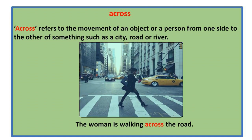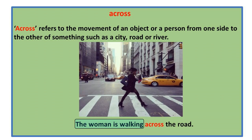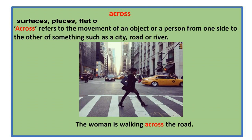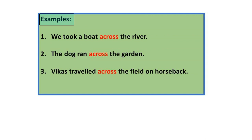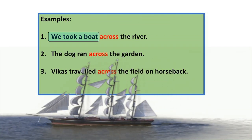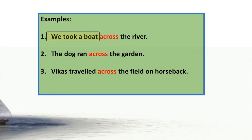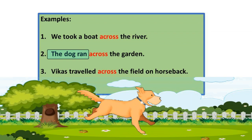Now look at the picture — in this, the woman is walking across the road. 'Across' is used with surfaces, places, flat objects or areas, or things that you are on. Let's read some examples. Please repeat after me: 'We took a boat across the river.' 'The dog ran across the garden.'